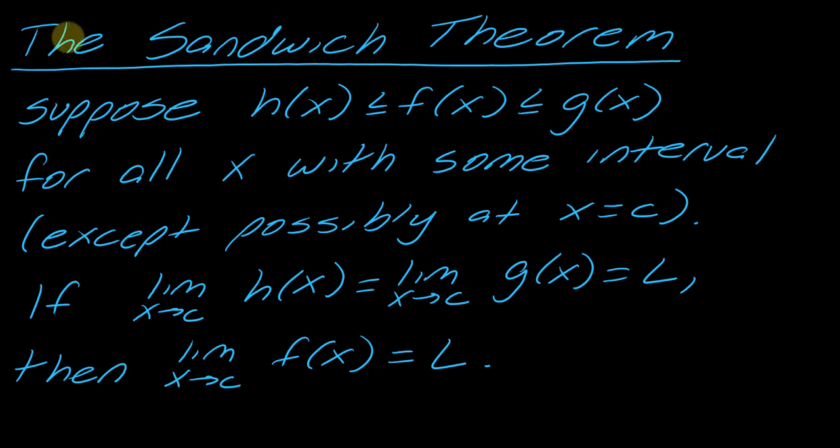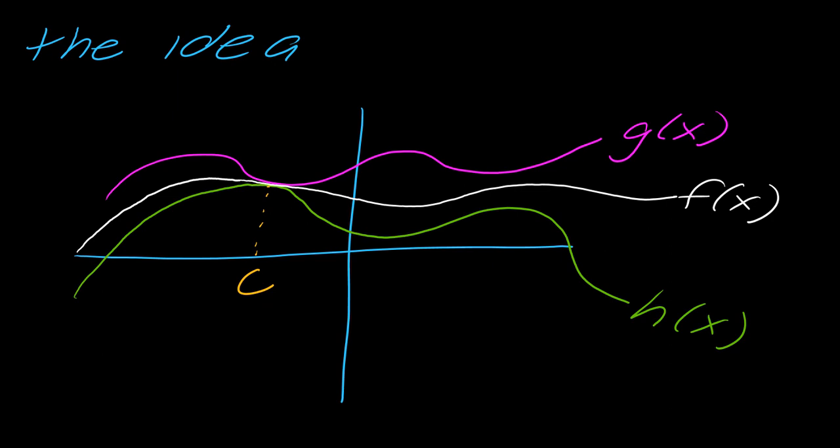So the sandwich theorem or squeeze theorem says suppose that you have f of x between h of x and g of x, that's exactly what I drew, this is for all x within some interval. Then if the limit as x approaches c of h of x is equal to the limit as x approaches c of g of x and all that equals L, then the limit of f of x as x approaches c will also be L. So that makes a lot of sense when you see the visual that goes with it.